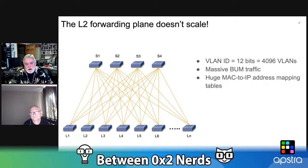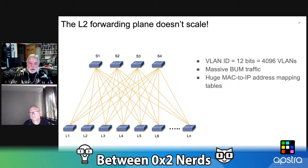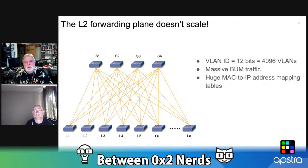Finally, if you have just a single layer two network, you've got huge MAC-to-IP address mapping tables — your basic switching or MAC tables. There are obviously memory limits in your switch and you don't want those tables growing enormous. All of that means we need some way of managing this network and virtualizing what we really want to build on top of this simple physical underlay.